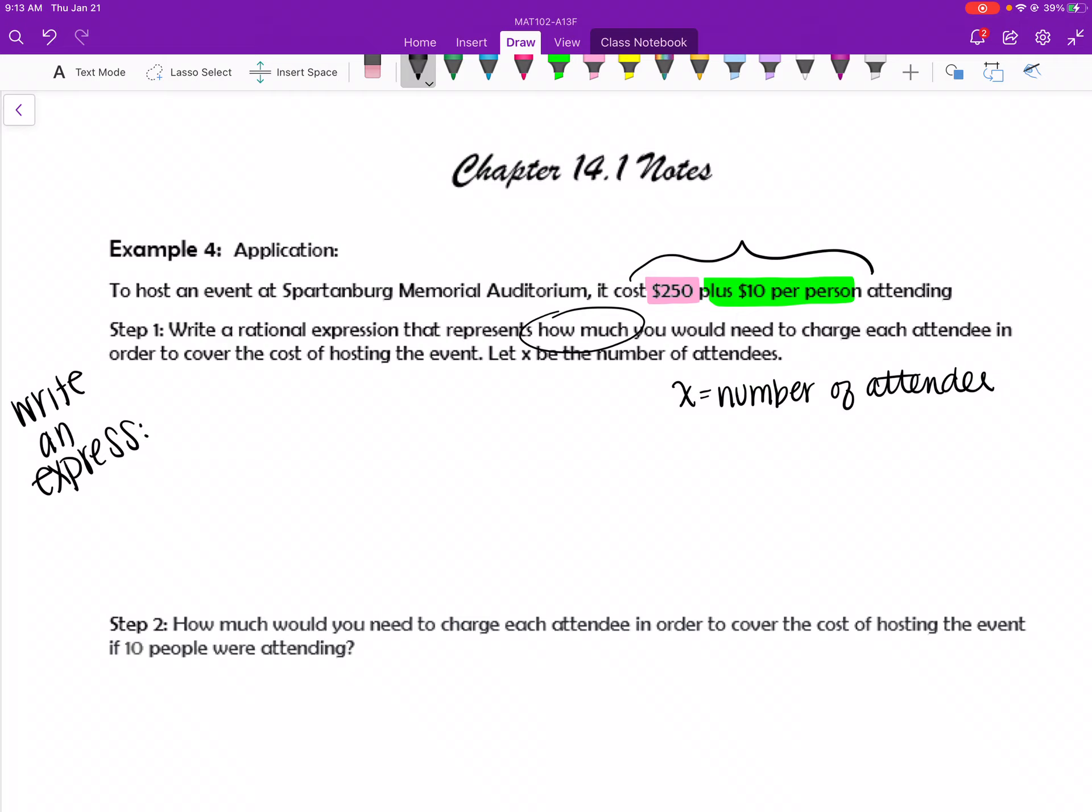So I've got $250 plus $10 per person. The total cost of the event is going to be $250 no matter what. It doesn't matter how many people are there. I have to pay, think of it as like a security deposit.